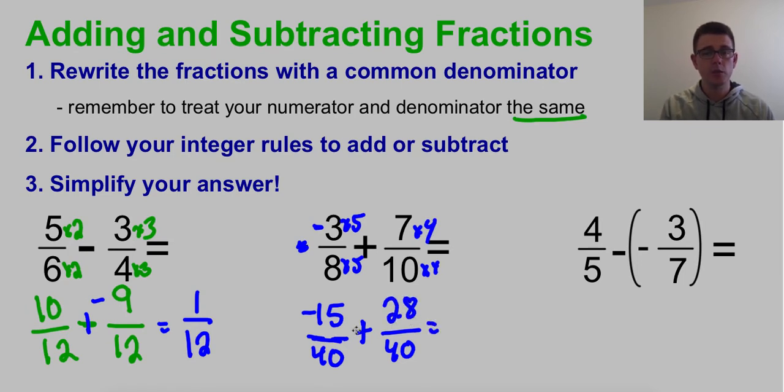Now I'm ready to use my integer rules. I have a positive and a negative, so they have different signs. So I'm going to subtract them. 28 minus 15 is 13. Denominator stays the same. And then I take the sign of the bigger number. The positive was bigger, so my answer is going to stay positive. In this case, I didn't have to simplify again either.